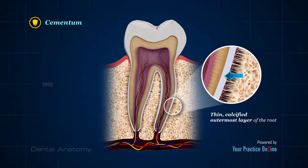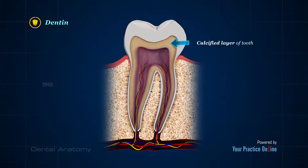Cementum is the thin, calcified, outermost layer of the root. It provides attachment for ligaments that support the tooth. Dentin is the calcified layer of tooth that lies inside the enamel and cementum. It forms the bulk of the tooth structure in the crown and root.